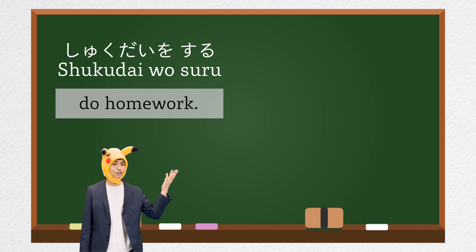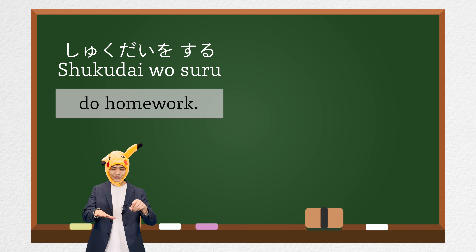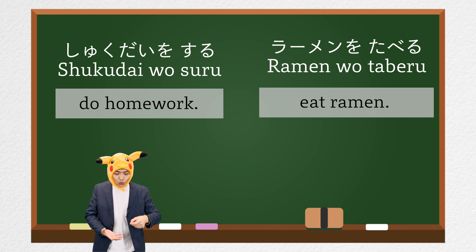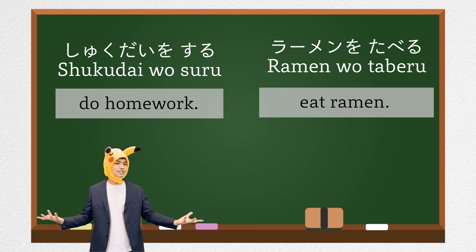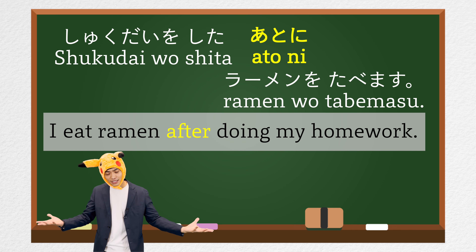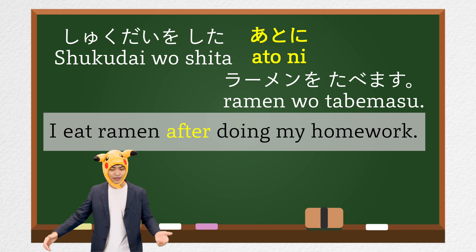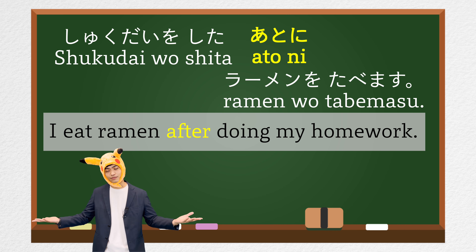For example, action 1 is 宿題をする (do homework), and then action 2 is ラーメンを食べる (eat ramen). For this situation you can say: 宿題をしたあとにラーメンを食べます. You place あとに between action 1 and action 2.